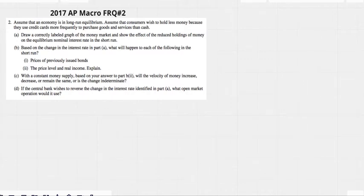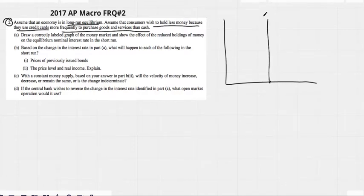AP macro FRQ. Let's do it. Assume that the economy is in long run equilibrium. Assume that consumers wish to hold less money because they use credit cards more frequently to purchase goods and services than cash. So first of all, let's just draw. We know our aggregate demand and aggregate supply curve. Make sure you understand it. It's not necessary for this question, but I'm drawing it anyway.